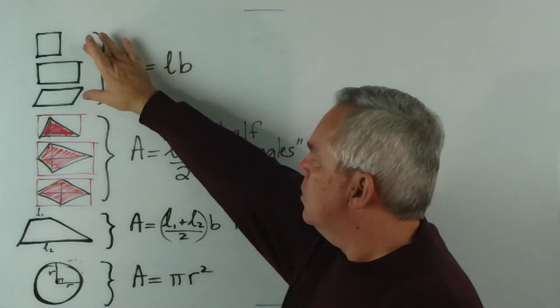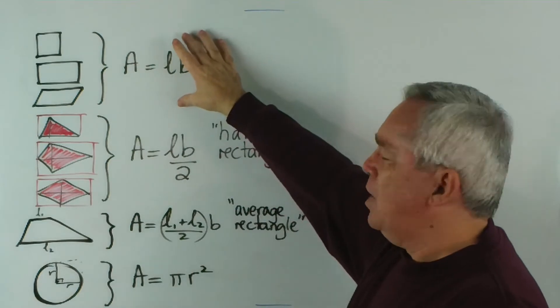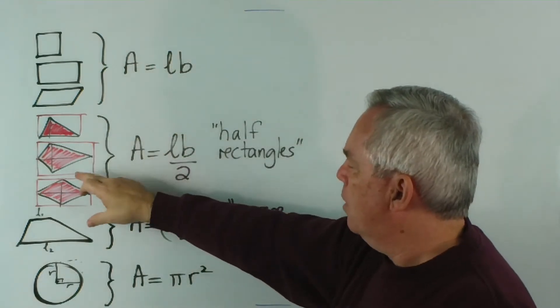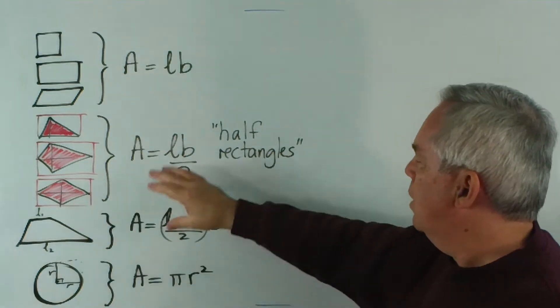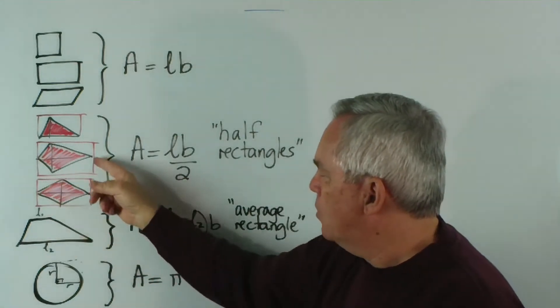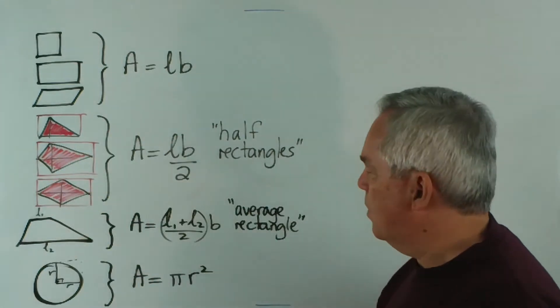We have three: the square, the rectangle, the parallelogram, that behave like rectangles. We have the triangle, the kite and the rhombus, that behave like half rectangles, because we saw that a rectangle fits around them and they take up half the space.